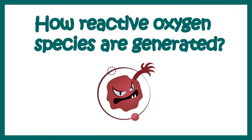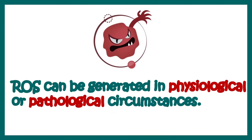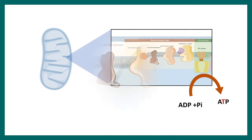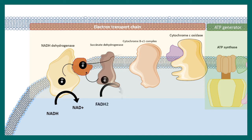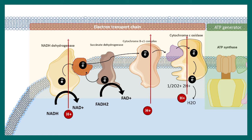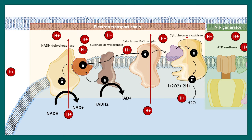Let's talk about how reactive oxygen species are generated. They can be generated under physiological or pathological circumstances. Under normal circumstances, when we are breathing, during cellular respiration, ROS can be generated in mitochondria. In the electron transport chain, electrons are relayed and ultimately accepted by oxygen, leading to the production of H2O. Simultaneously, protons are pumped out, creating a proton gradient that is utilized to generate ATP with the help of ATP synthase enzyme.